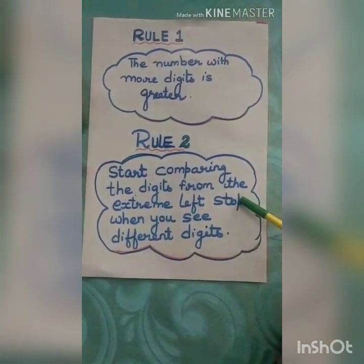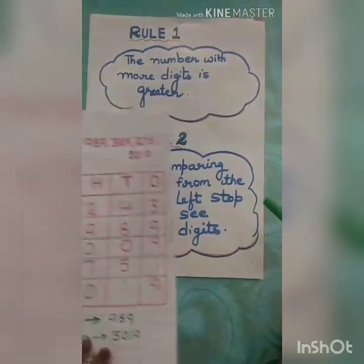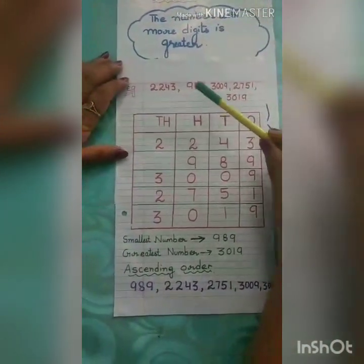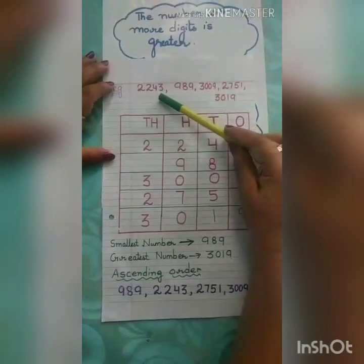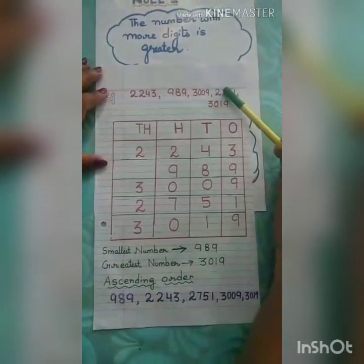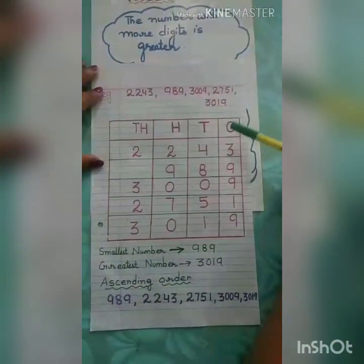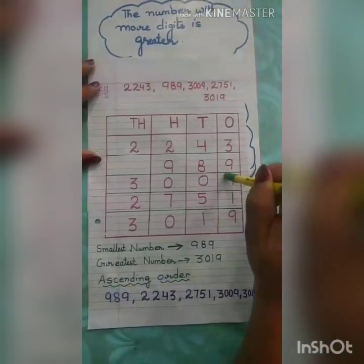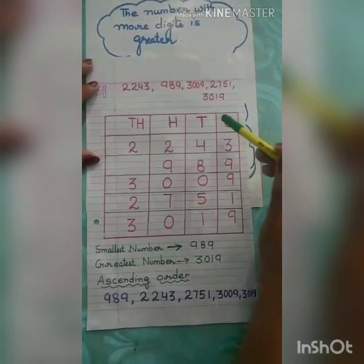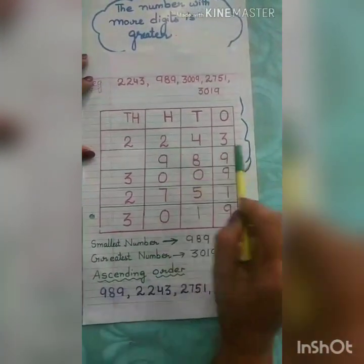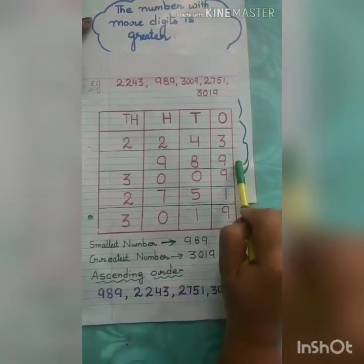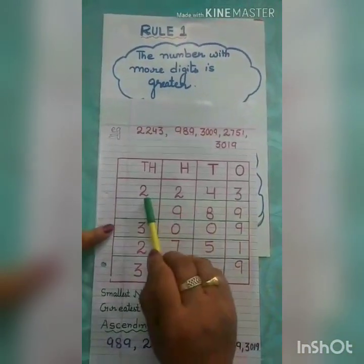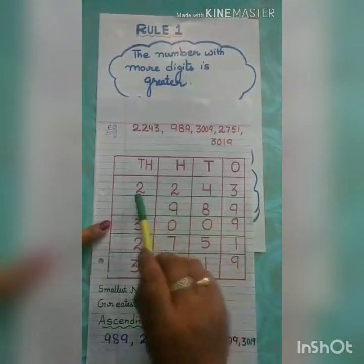We will explain this with one example. Suppose we have different numbers. First of all, we write them and place them in their place value chart. Now we go with the rules. First rule says: the number with more digits is greater. First of all, we count the total number of digits.